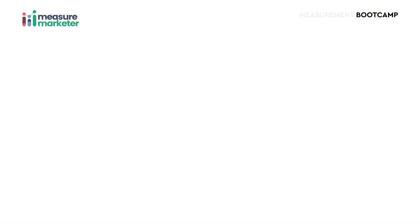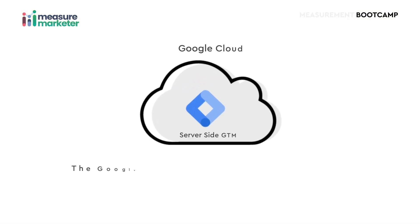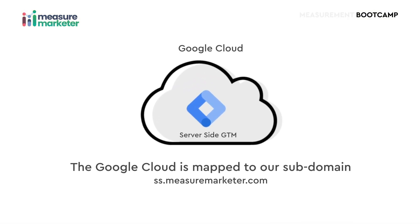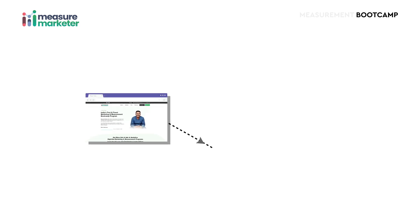When you implement server-side tagging, you have one website GTM — which we call web GTM — and then you create one more GTM called server-side GTM. This server-side GTM will be hosted on Google Cloud, and you configure that Google Cloud instance to be mapped to your custom domain.